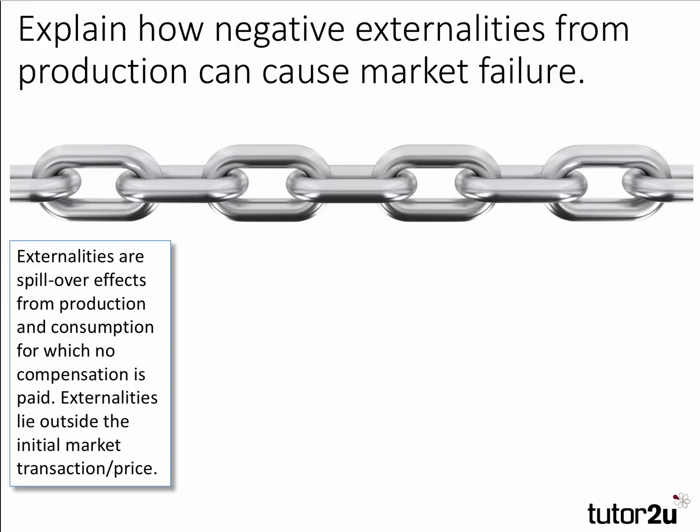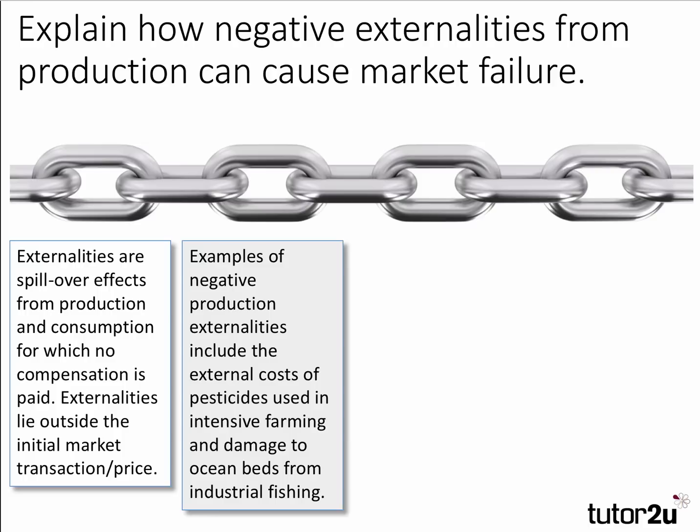It's important to define key terms. An externality is a spillover effect from production and consumption for which no compensation is paid, and the key point is that externalities lie outside the initial market transaction — outside the market price. Always good to support your answer with examples. Examples of negative production externalities include the external costs of pesticides used in intensive farming, and also damage to ocean beds from large-scale industrial fishing.